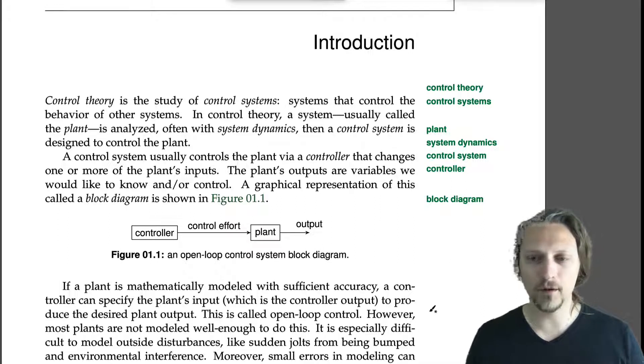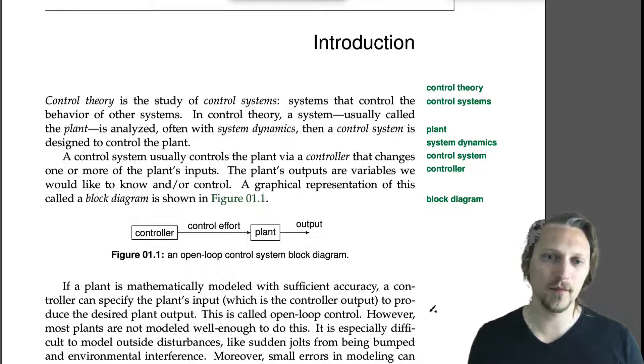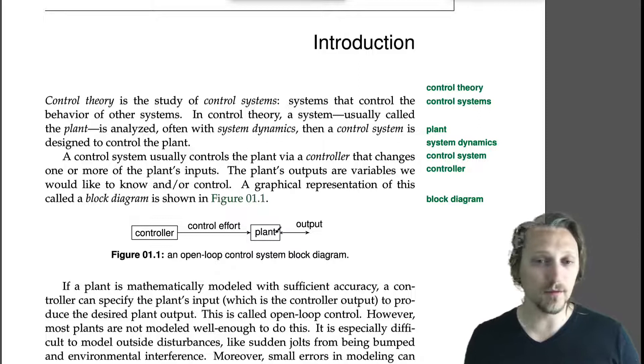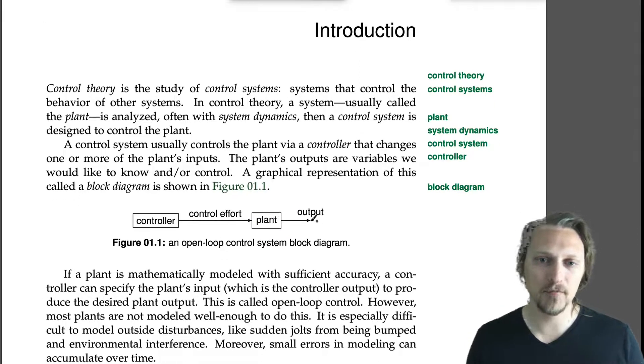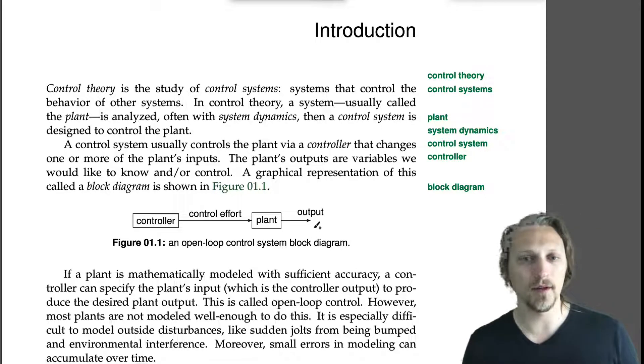A graphical representation of this, called a block diagram, is shown in figure 1.1. So we have a plant, the behavior of which we would like to control. So we want to control at least some aspects of what's happening in the plant.